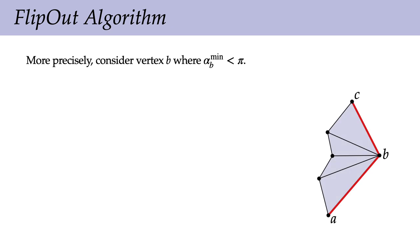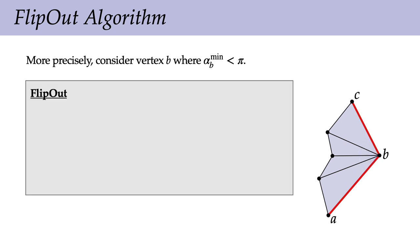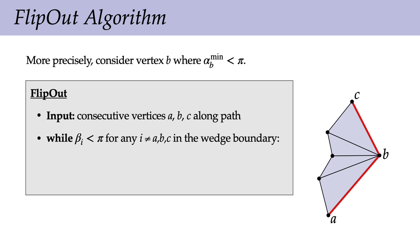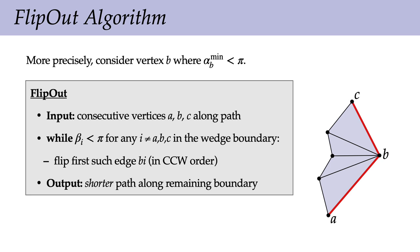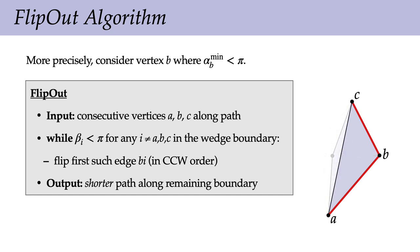More precisely, consider some vertex B where the smaller angle is less than pi, and let A and C be the two neighbors along our current path. We look at the other angles on the left side of this wedge, and while there's any angle less than pi, we repeatedly flip the edge incident on the first such angle in clockwise order. Once there are no more edges to flip, we replace the current path with the path along the left side of this wedge. For example: we have an angle less than pi, so we flip that edge; we have another angle less than pi, so we flip that edge; and so on, until things work out and we just have one edge on the left side — by triangle inequality, that new edge is shorter than the original path.